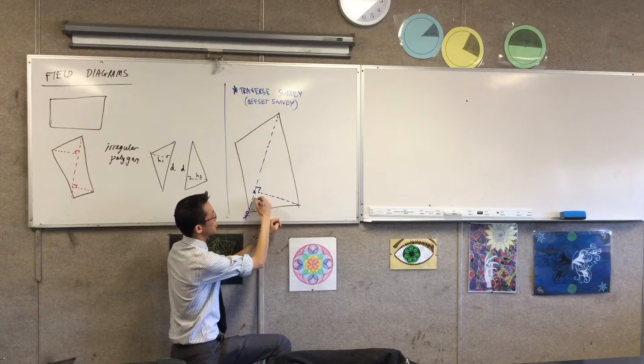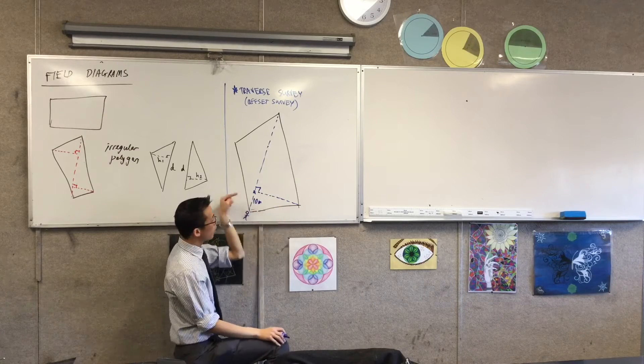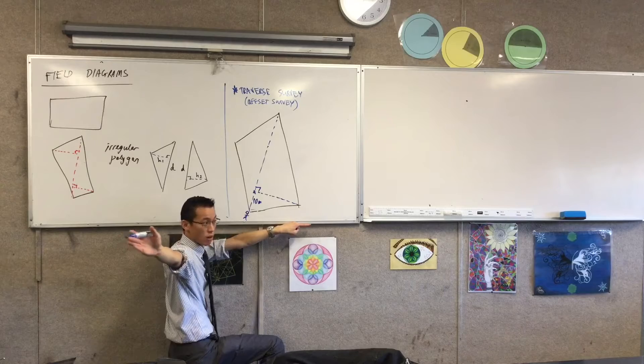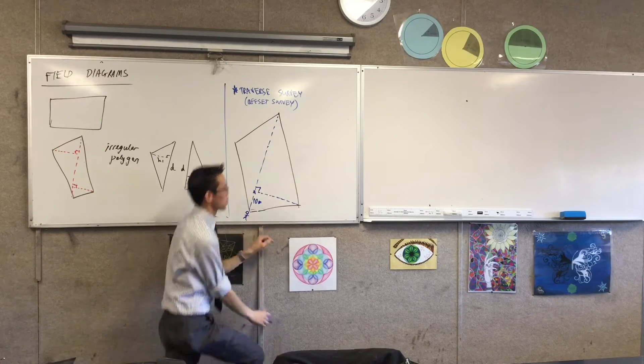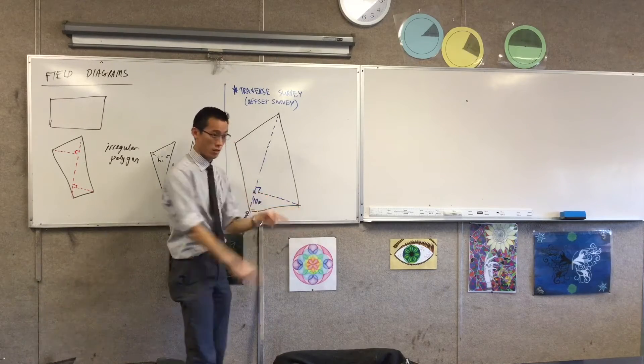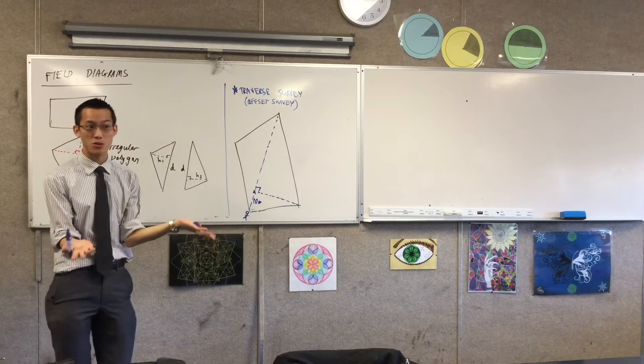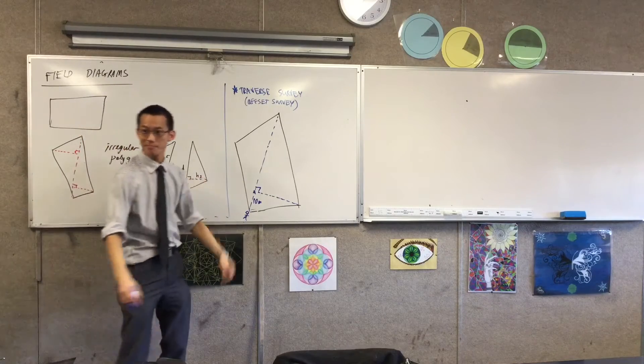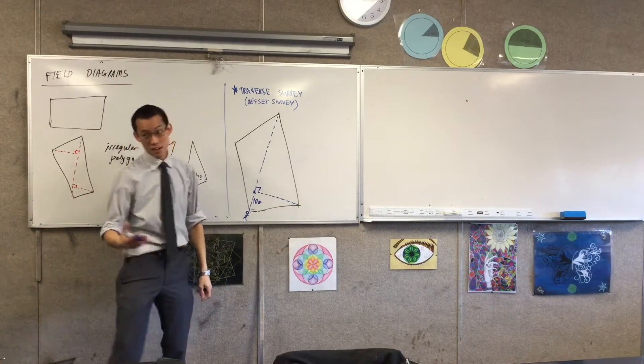So maybe you walked 10 meters and you saw, oh look, I can see the corner now. It's right on my right hand side. So I'm gonna get someone else to walk along again with the trundle wheel and I'm gonna measure it out.